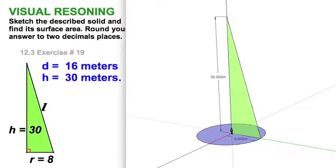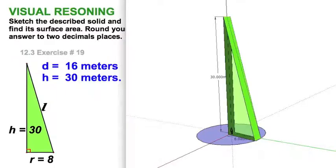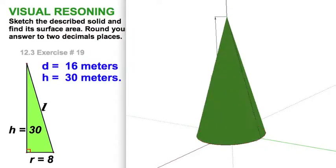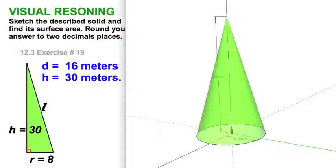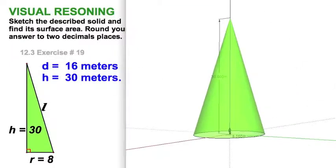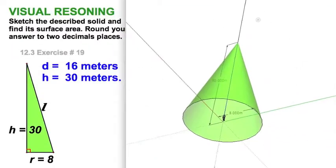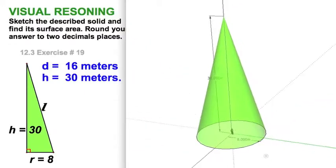In exercise 19, we're going to draw a sketch of a cone with diameter 16 meters, which means a radius of 8 meters. The height of the entire figure is 30 meters, so this figure really dwarfs our model. We do an extrude of this triangle because it's a solid of revolution. Spinning it around, you can see what our cone would look like. Now we're going to find the surface area of this cone.